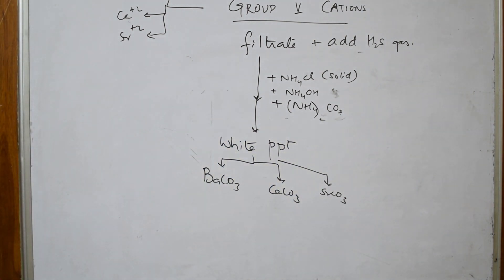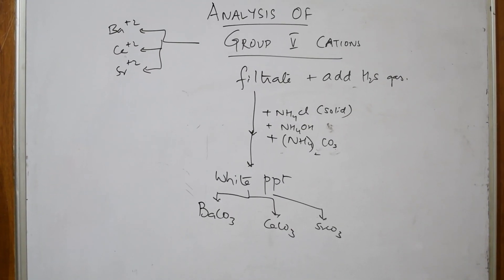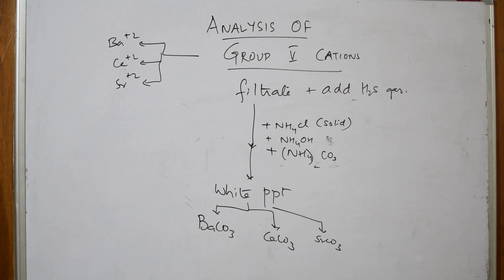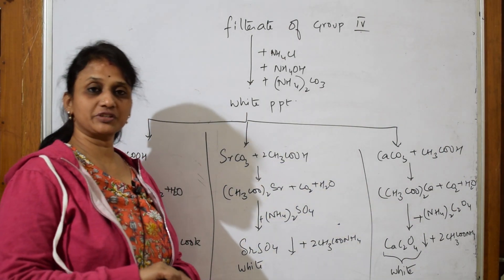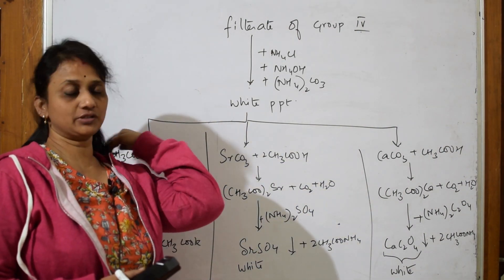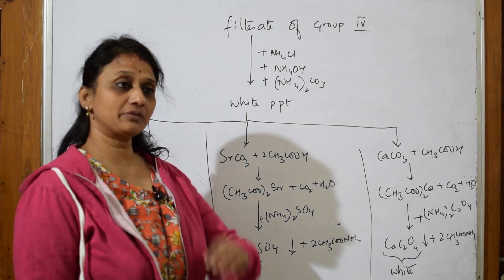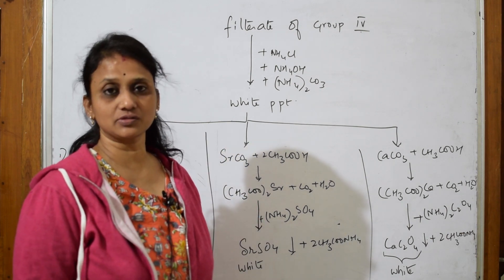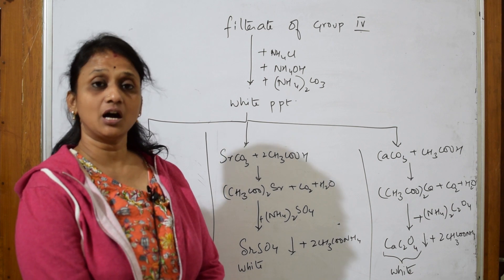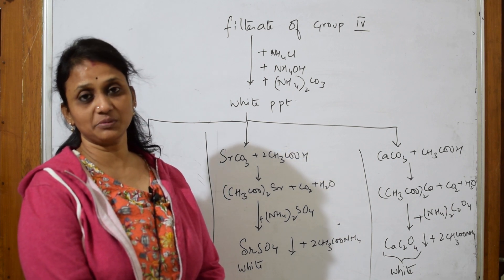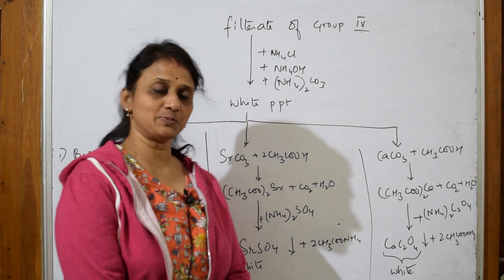After adding the group reagent, you get a white precipitate which could be barium carbonate, calcium carbonate, or strontium carbonate. This is a common 'why' question examiners ask: how do Group 5 cations precipitate? Similarly they may ask about Group 1, Group 2 cations. Be very clear when answering.